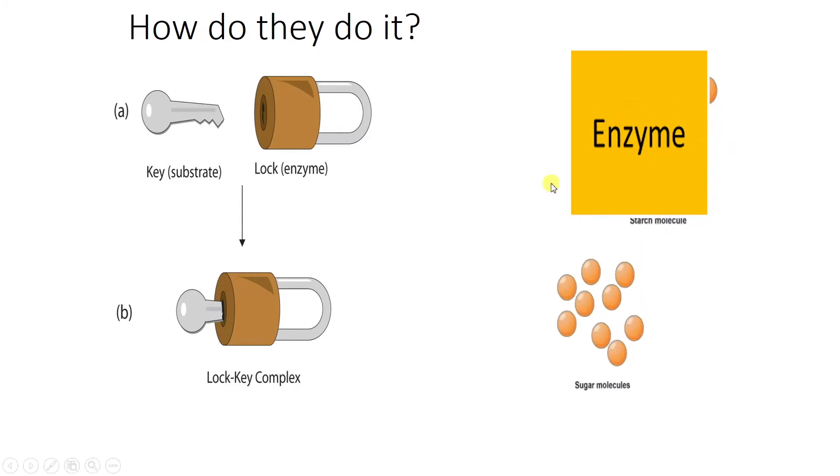So once it's joined then it will come back out the other side and this will be the products. So we said before that starch gets broken down, so it actually gets broken down into sugar molecules. So that's what happens. They come together just like in a lock and key and then something happens. So it unlocks the lock or in the enzyme's case it produces these products.